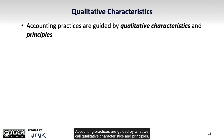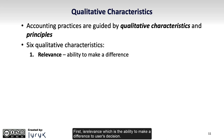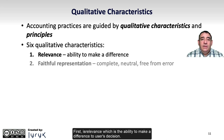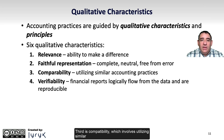Accounting practices are guided by what we call Qualitative Characteristics and Principles. There are six qualitative characteristics. First is Relevance, which is the ability to make a difference to a user's decision. Second is Faithful Representation, where the financial information is complete, neutral, and free from error. Third is Comparability, which involves utilizing similar accounting practices so financial reports can be compared period to period.